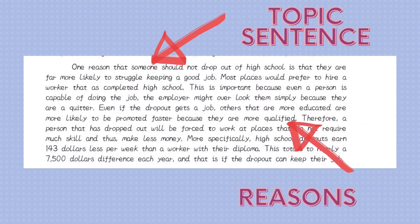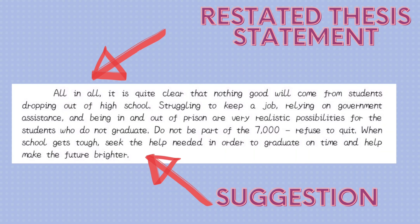In the second paragraph, we can find the topic sentence and then the reasons. For the reasons: 'Most places would prefer to hire a worker that has completed high school. This is important because even if a person is capable of doing the job, the employer might overlook them simply because they are a quitter. Even if the dropout gets a job, others that are more educated are more likely to be promoted faster because they are more qualified.' In the last paragraph, we can find the restated thesis statement: 'All in all, it is quite clear that nothing good will come from students dropping out of high school.' And for the call to action: 'When school gets tough, seek the help needed in order to graduate on time and help make the future brighter.'